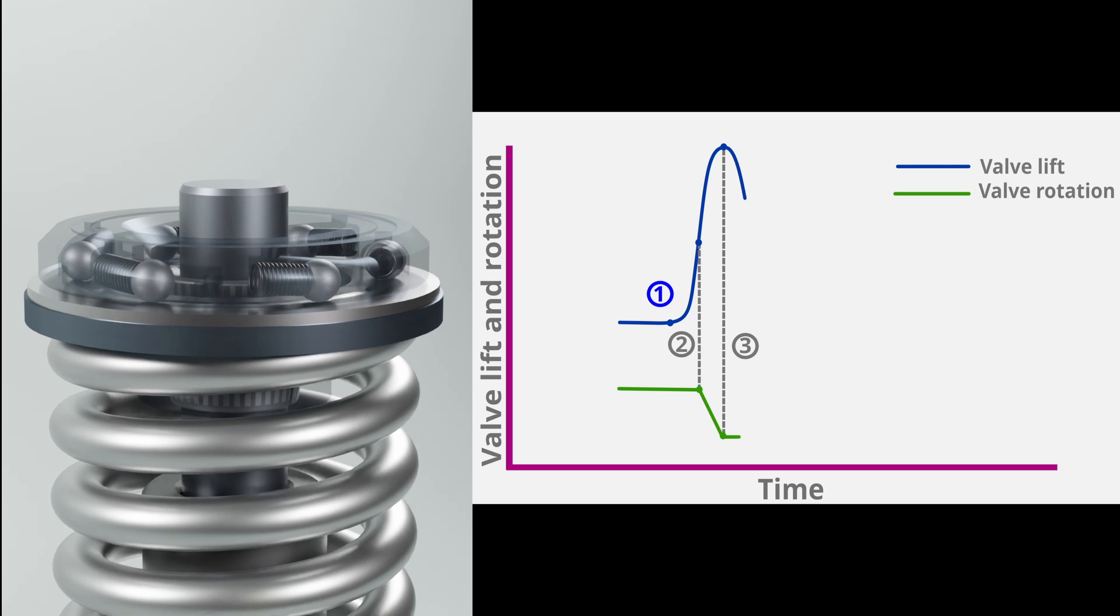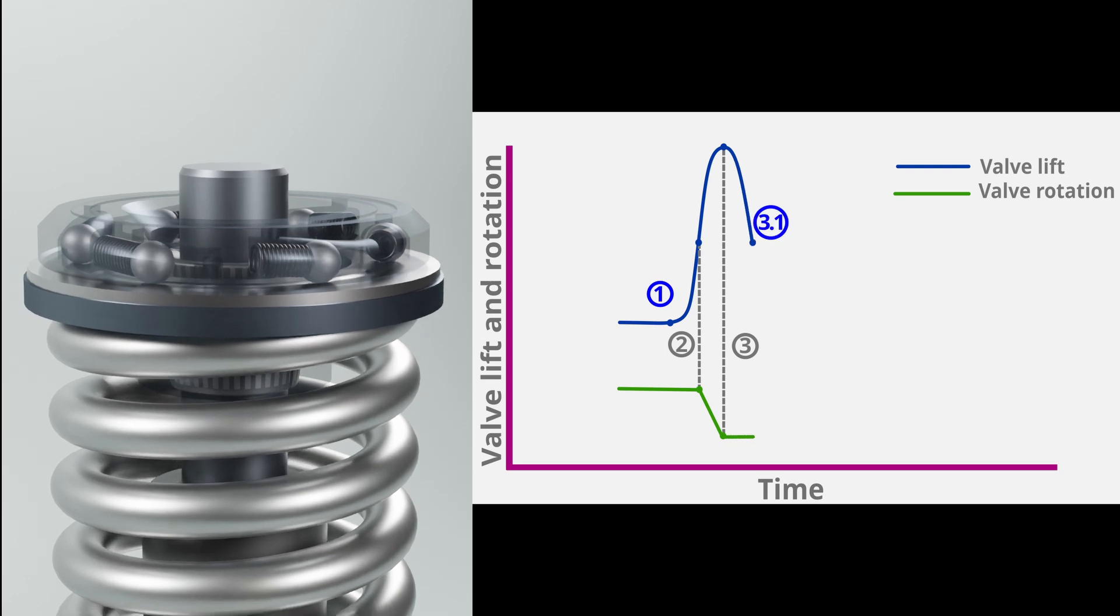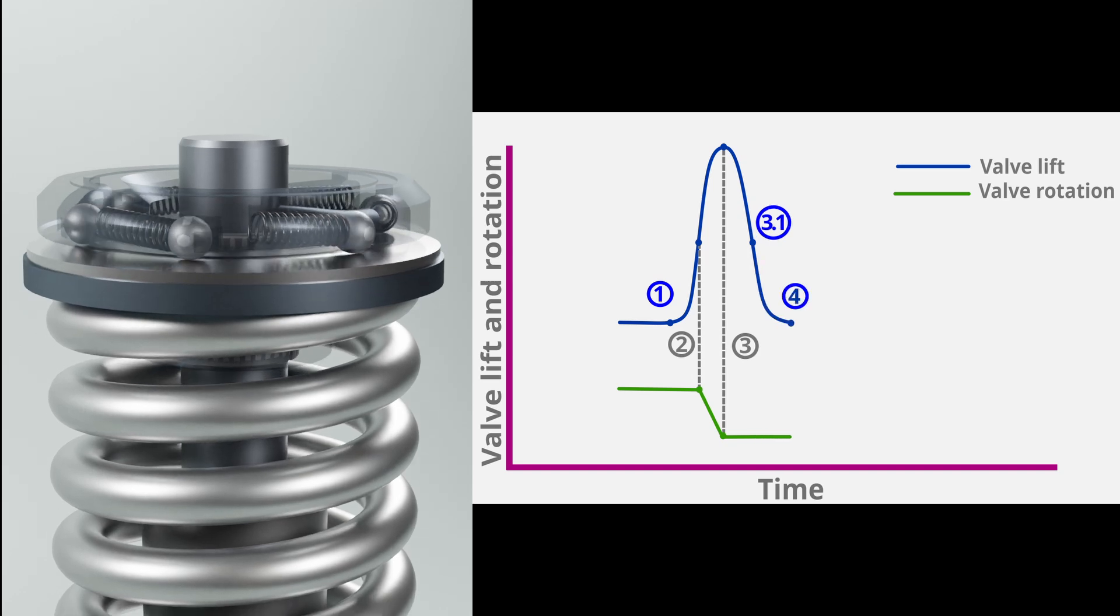From point 3 to 3.1, valve moves upward without rotation. Disc spring is still compressed and steel balls are in the recessed state. From 3.1 to 4, valve continues to move upward. At the same time, disc spring returns to its original position and steel balls and springs return to their original state, resetting the rotocap. And this cycle continues.